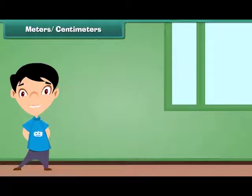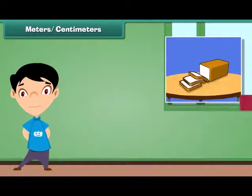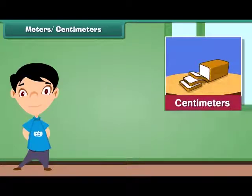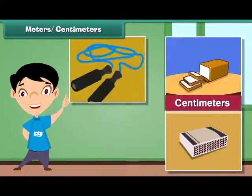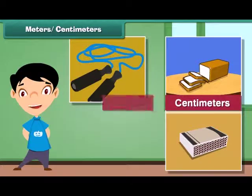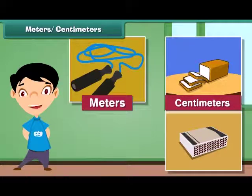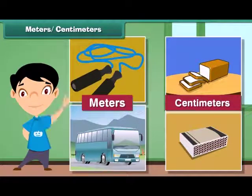Let us compare the length of the various things. Some of the objects have their length in meters while some of them are so small that they are measured in centimeters only. Length of a bread loaf is expressed in centimeters. The length of a matchbox is expressed in centimeters. The length of a skipping rope is expressed in meters. The length of a bus is expressed in meters.